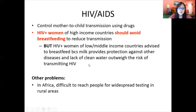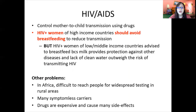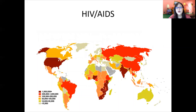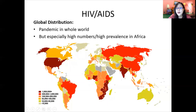Controlling HIV and AIDS is not easy — it is a worldwide pandemic, especially severe in Africa where AIDS numbers are very high. It is very difficult to reach people for widespread testing in rural areas that are not well developed. Many people may be carriers without being aware. Even if someone tests positive, controlling it is difficult without money, as drugs are expensive and many people in affected regions cannot afford them.